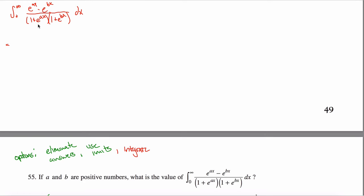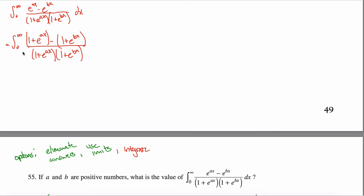One trick is to recognize that the numerator can be rewritten. If I add one and subtract one from the numerator, I get (one plus E to the AX) minus (one plus E to the BX), all over (one plus E to the AX)(one plus E to the BX). I added a one and a negative one, but now I have two terms in the numerator, so I can break this into two fractions. The advantage is the first fraction's (1+e^(AX)) cancels with the denominator factor, giving one over (1+e^(BX)) minus one over (1+e^(AX)).